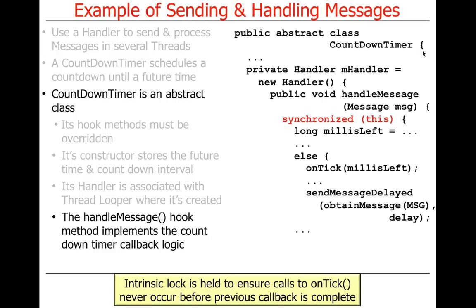From a framework design perspective, this is clearly a framework. How do we know? It has inversion of control - Android runs the event loop, we use the Android handler framework for sending and receiving messages. We, the people subclassing CountdownTimer, just subclass it and fill in the onTick and onFinish hook methods. Everything else is controlled for us - canonical control flow, canonical structure. That's the third part of what makes something a framework: a semi-complete portion of an application.